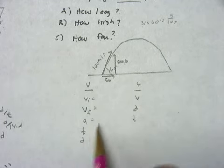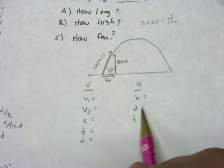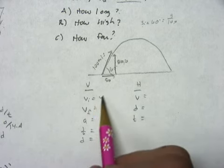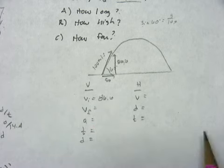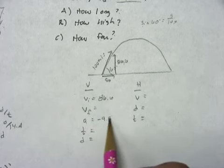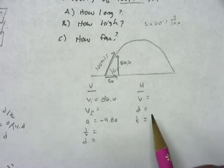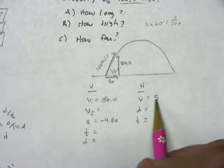So my initial velocity vertically is 86.6. My acceleration is negative 9.80. The time, oh, my horizontal velocity is 50.